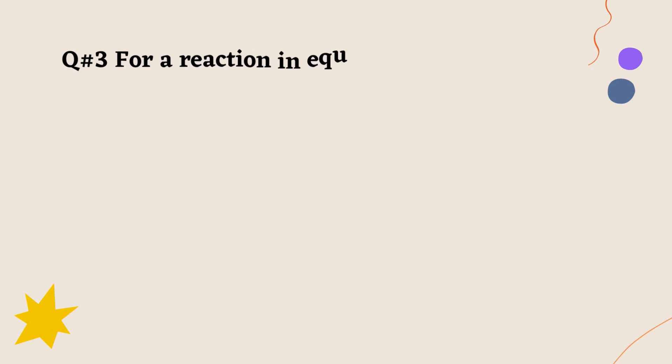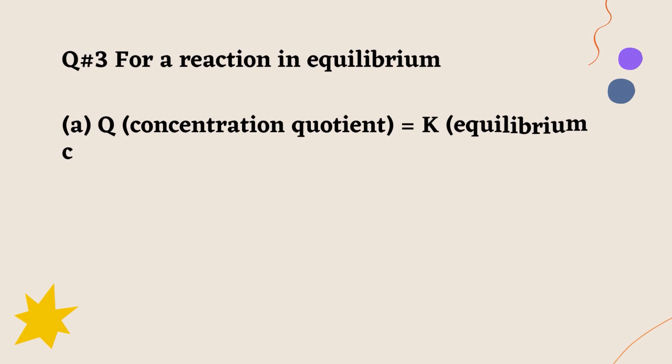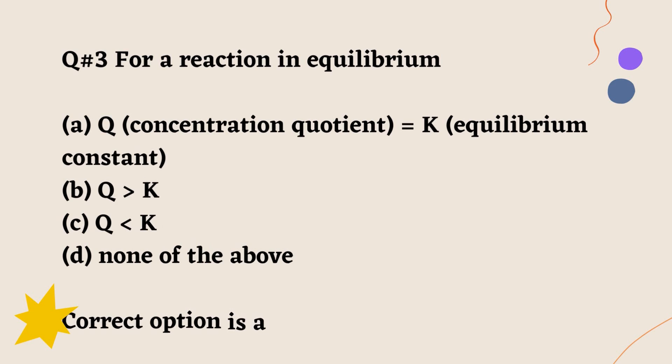Question number 3. For a reaction in equilibrium. A. Q concentration quotient equals K equilibrium constant. B. Q greater than K. C. Q less than K. D. None of the above. Correct option is A.